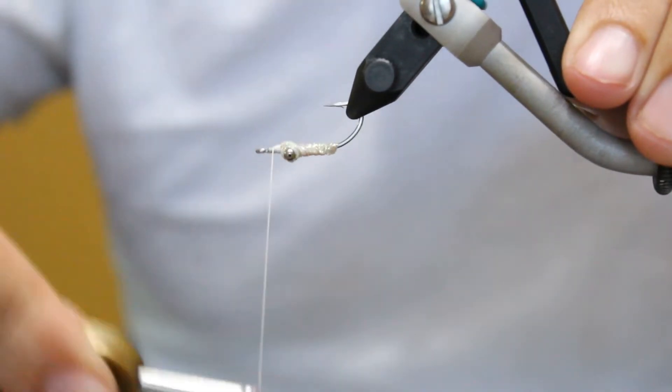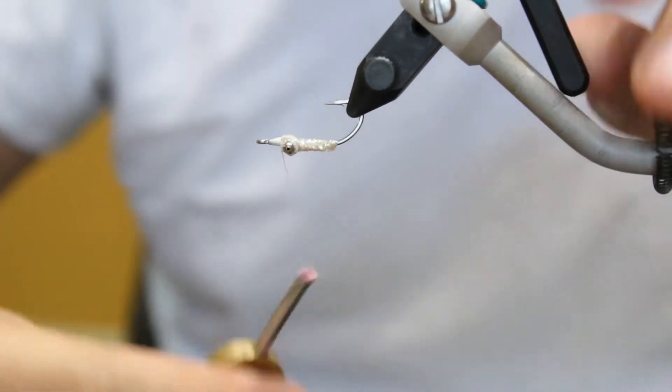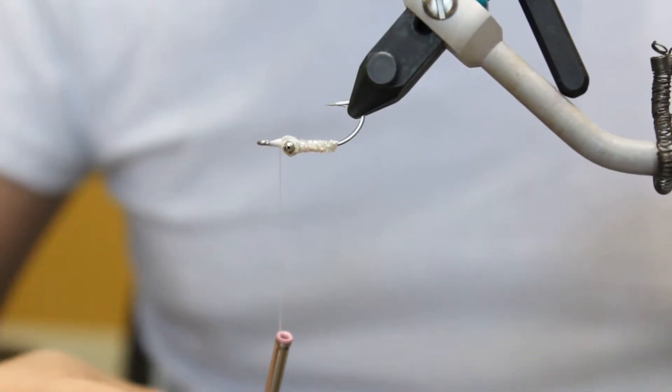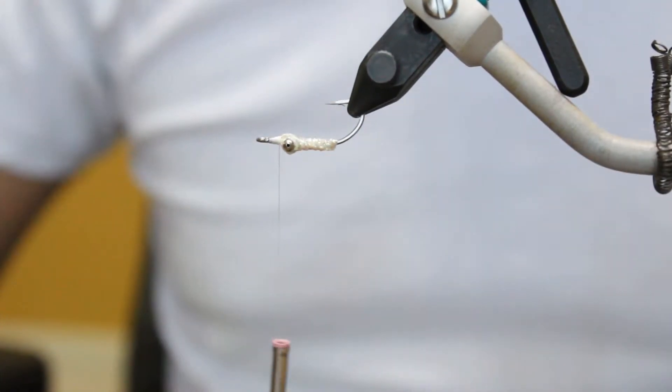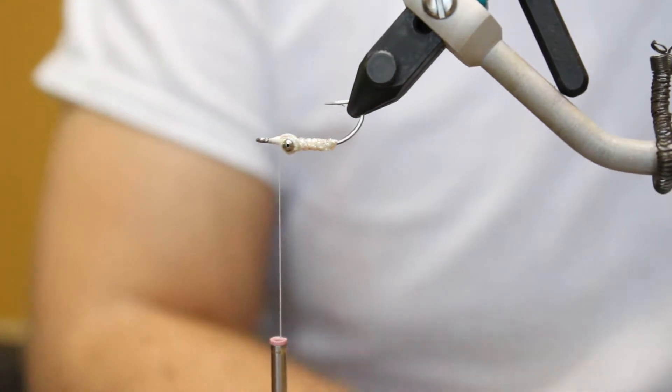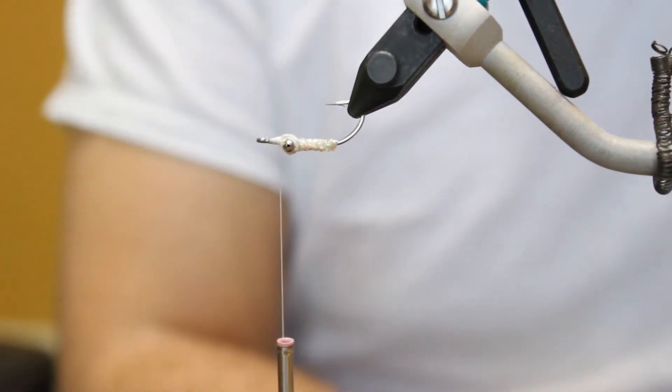So we're going to put a few tight wraps on here, make sure that's all good to go. Now you have a nice flashy body on it. You can use a lot of different materials. Like I said, there's a thousand different ways to do this fly. They're really effective in a sand color.